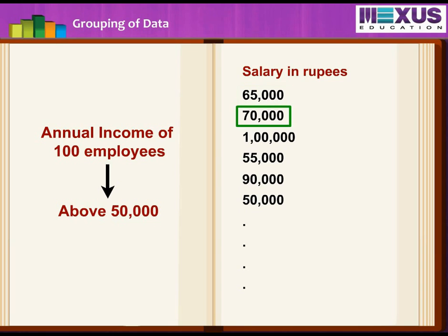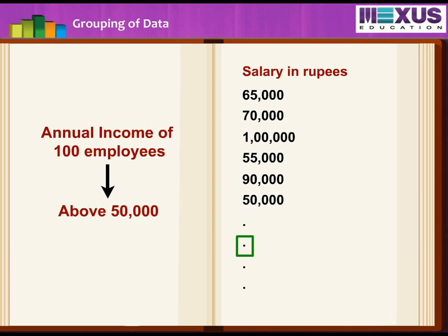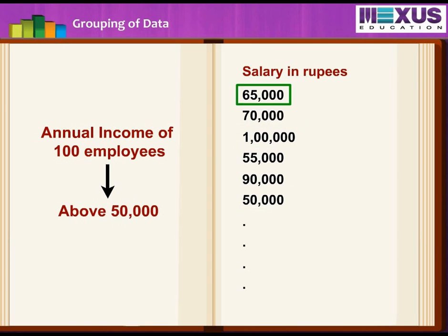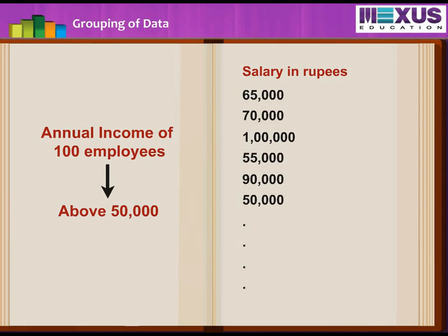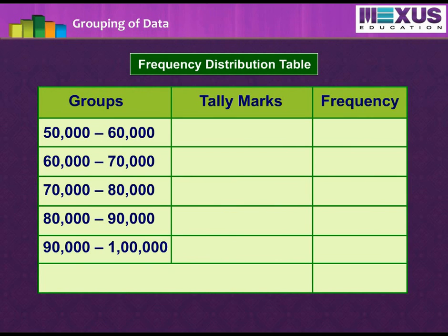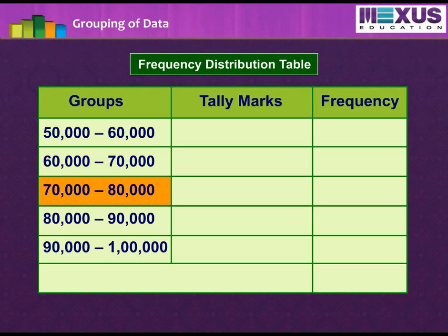65,000, 70,000, 1 lakh, 55,000, 90,000, 50,000, and so on. As it was a large data ranging from 50,000 to 1 lakh, so even if we make a frequency distribution for each observation, it would be a large table. So instead of tabulating each observation, the data can be classified into small groups, like 50,000 to 60,000, 60,000 to 70,000, and so on, till 90,000 to 1 lakh.